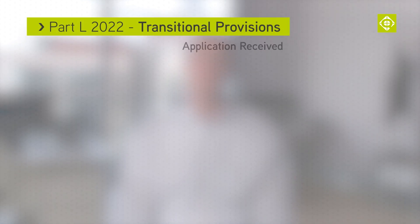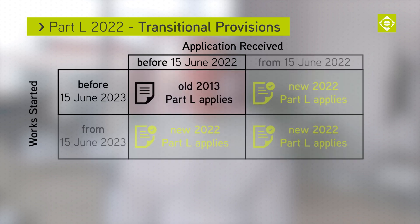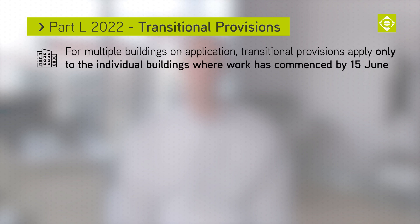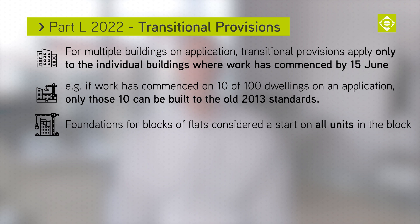Transitional provisions are in place for the new approved documents. To use the old 2013 edition of Part L, an application must be received before 15 June 2022 and work must have started on site before 15 June 2023. For multiple dwellings or buildings on an application, work on each unit must have commenced for the transitional provisions to apply — so for an application of 100 dwellings, work on all 100 units must have commenced before 15 June 2023. If only 10 dwellings have started, only those can be built to the 2013 standards; the remainder must meet the new 2022 standards. Foundations for blocks of flats are considered a start on all units within that block.